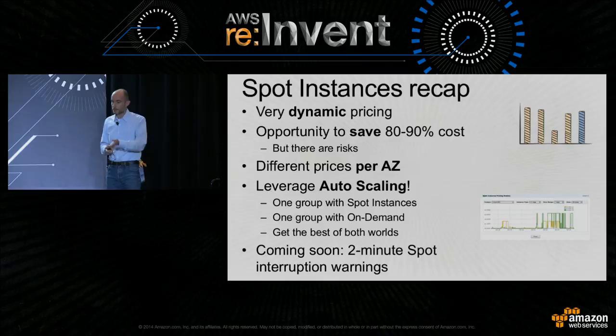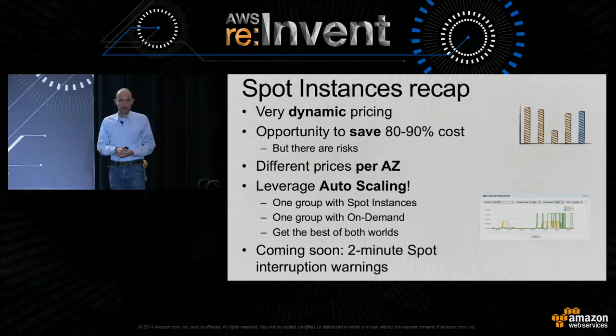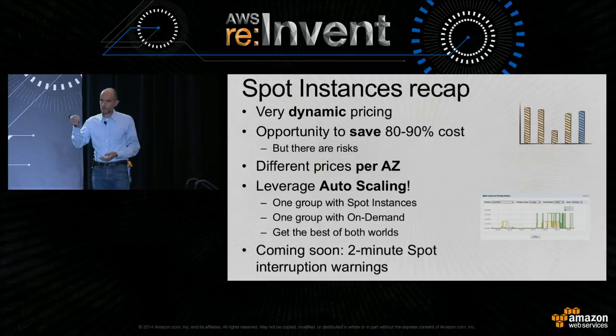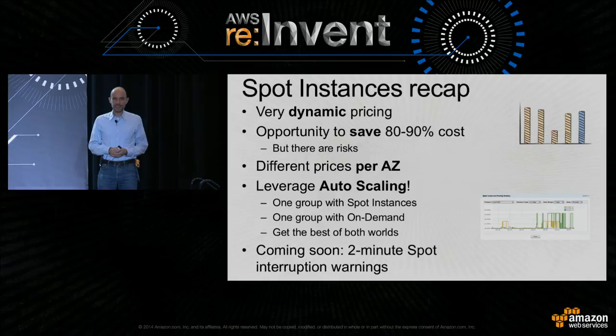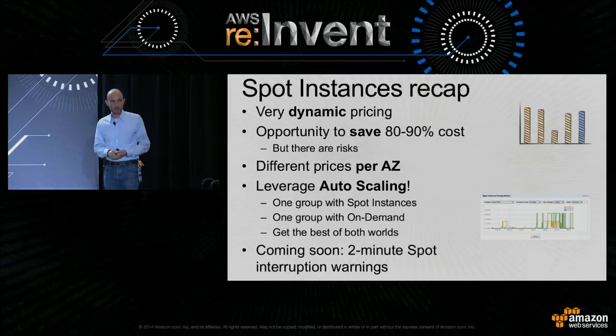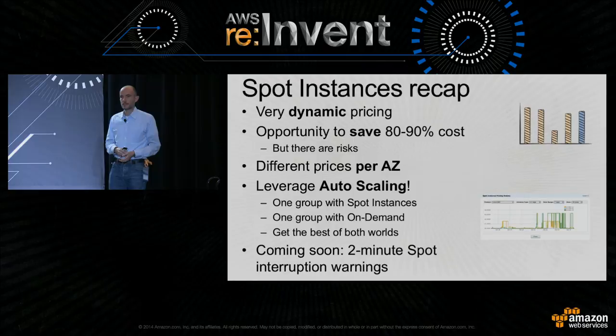I recognize that sometimes it can be a challenge to react to the unexpected termination of spot instances. To help make life a lot easier, I'm very glad to pre-announce that the spot team is working on a new feature that will allow you to get a two-minute warning before the instance gets terminated. In a couple of weeks you'll see the announcement — this gives you enough time to save everything, migrate to a different availability zone, and mitigate against the cancellation of spot instances.